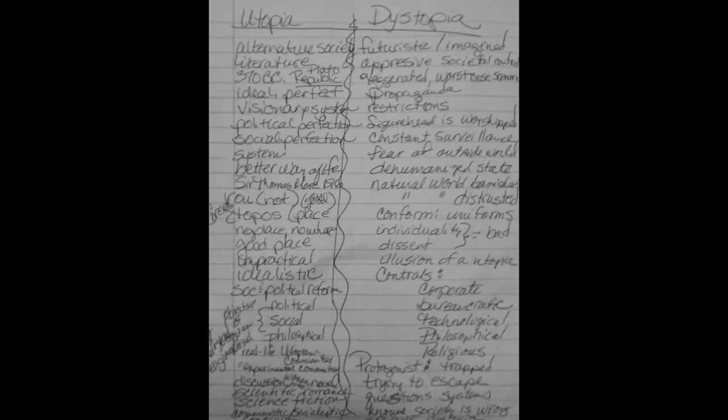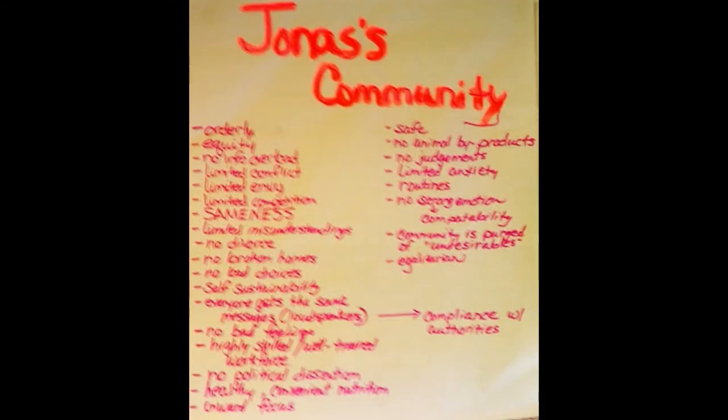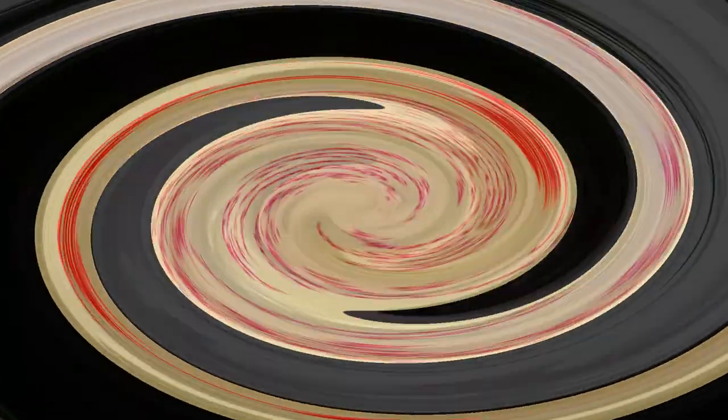I would put these co-created charts up on the wall and put the study strategies just to the right of them, so the students always knew not only what they were studying but how they were studying it. Here we see some elaboration about the specifics of utopia and dystopia, as well as elaboration on deconstruction from our study on reading Lois Lowry's 'The Giver.'